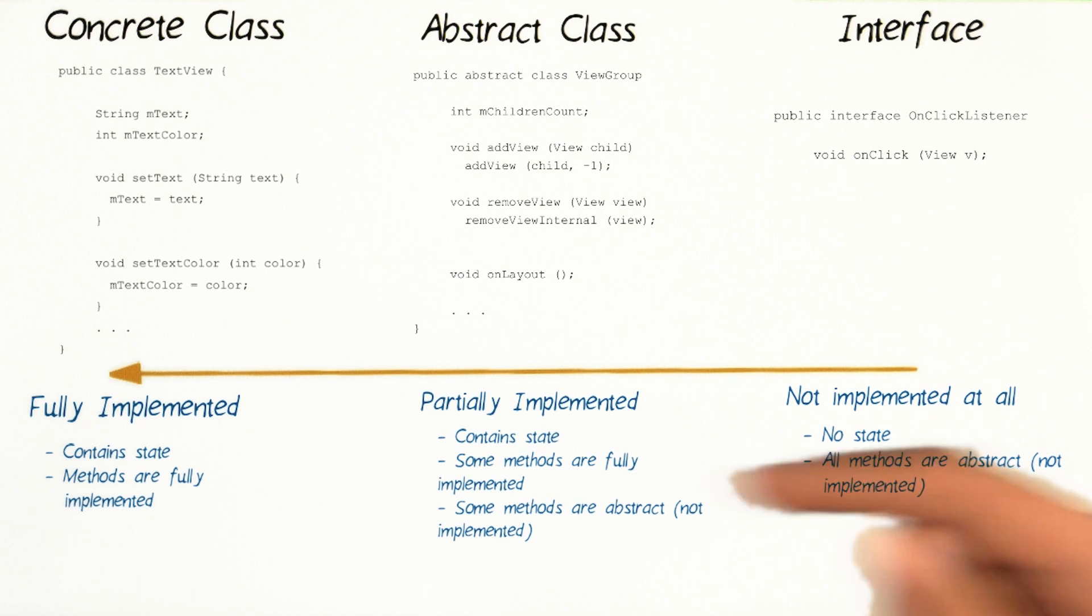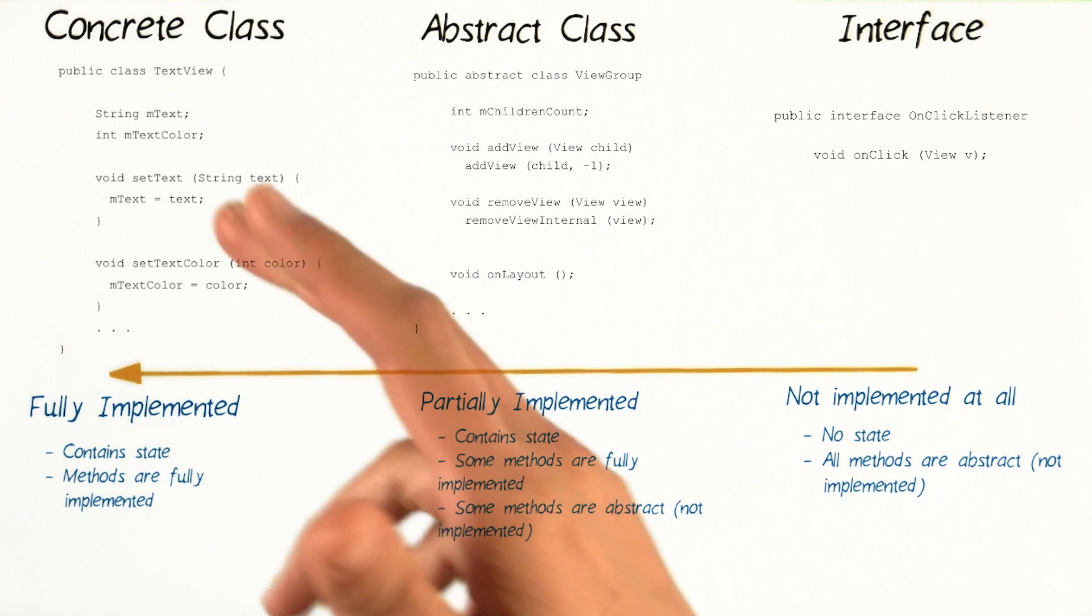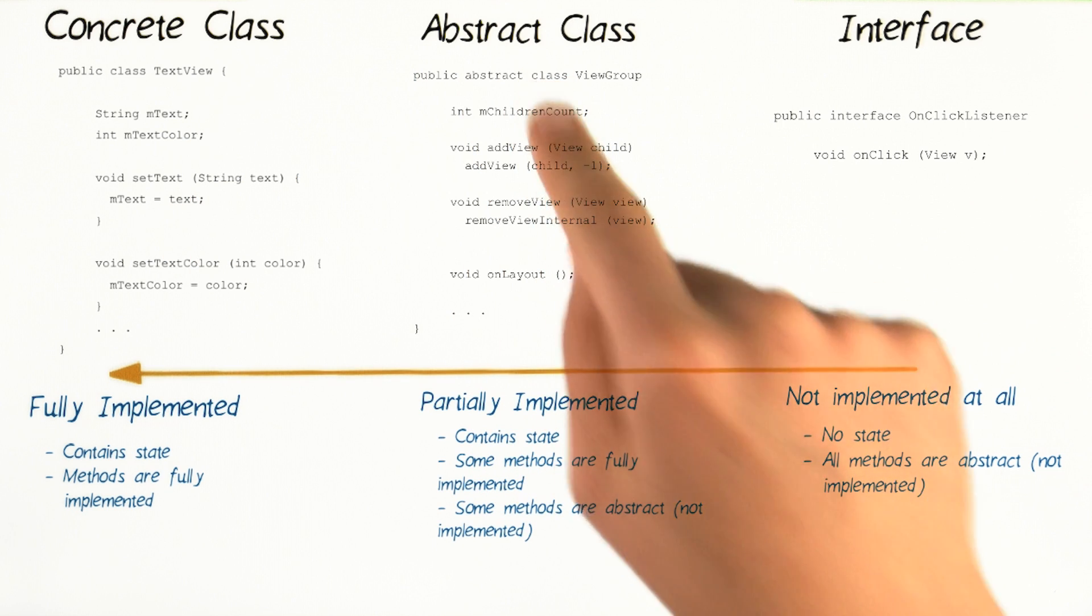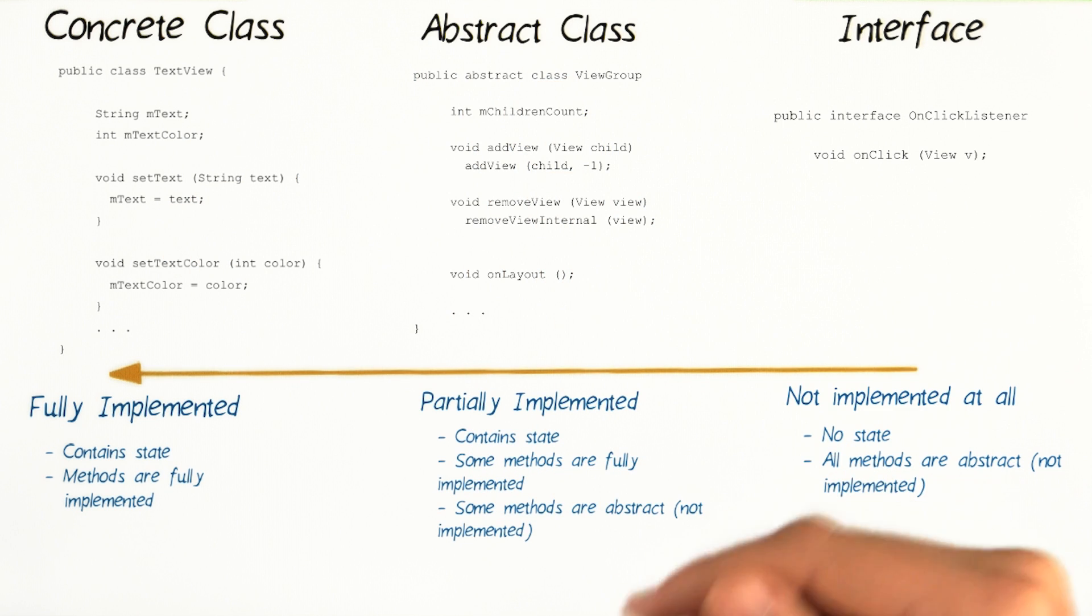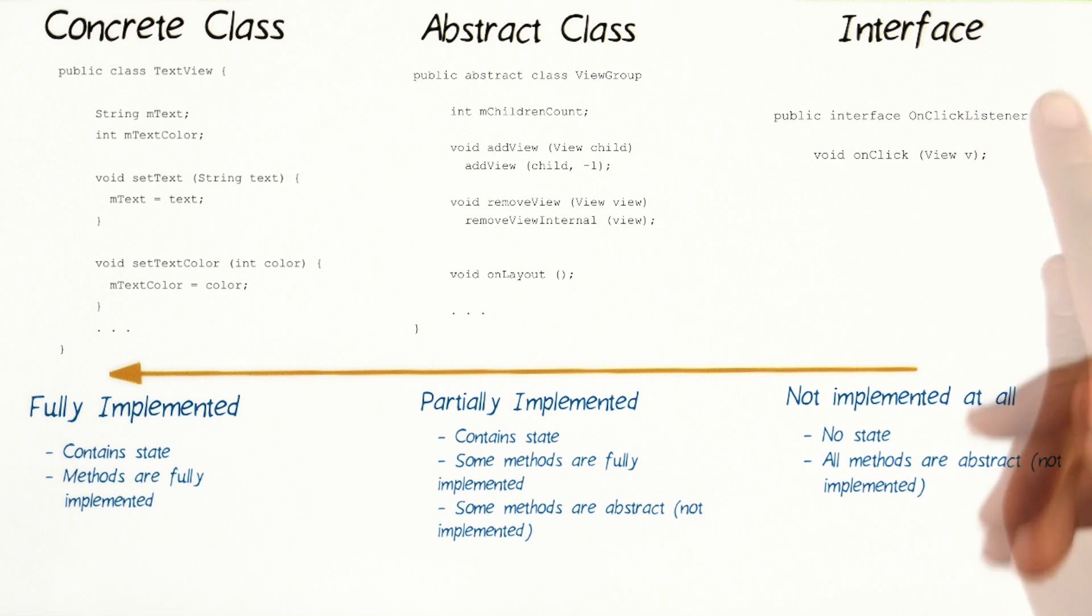So to summarize, if you come across a concrete class in Android, you can use it right away. If you come across an abstract class, you need to subclass this, and then provide your own code for the abstract methods. If you come across an interface, you need to provide for all the abstract methods.